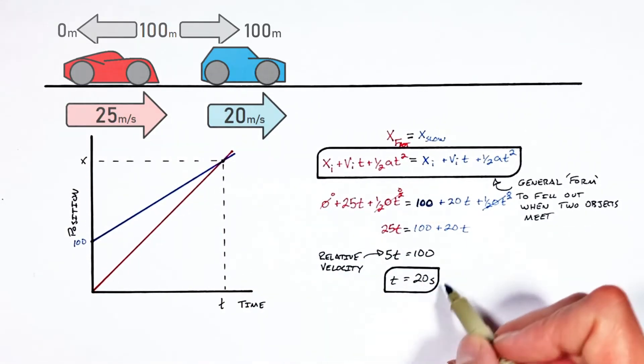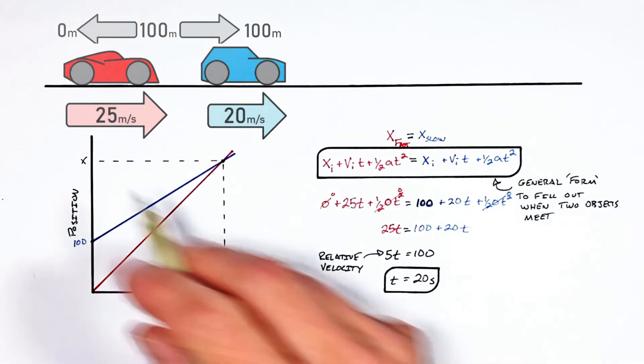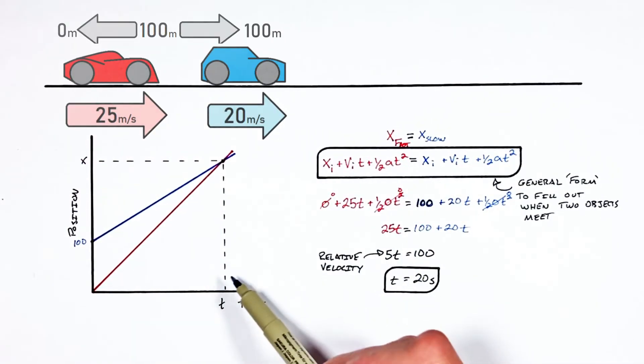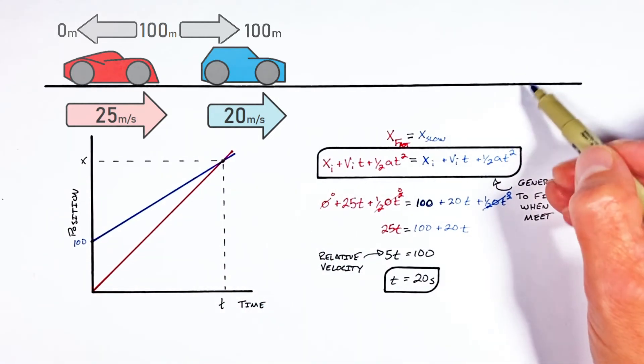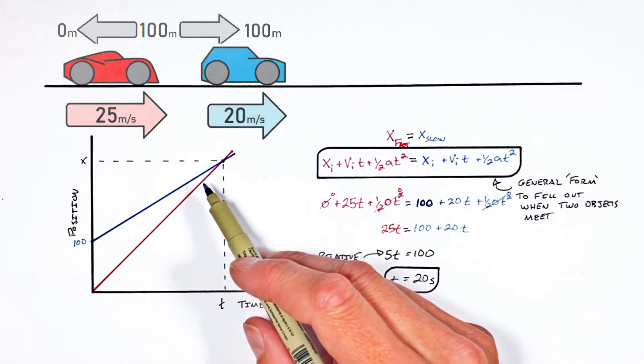But going back to the original problem. Now that we know the time it takes for the fast car to catch the slow car. We can go through and solve for where over here the two cars are going to be at the same position.